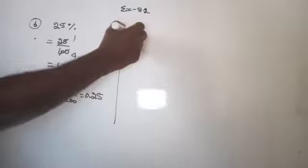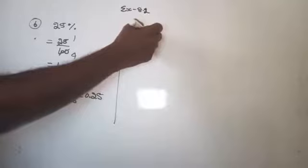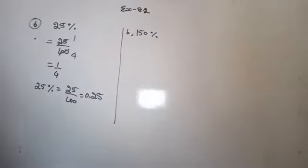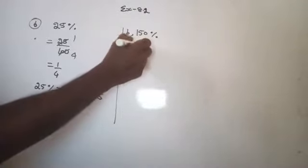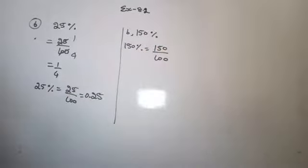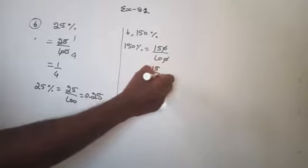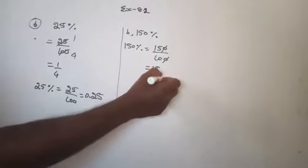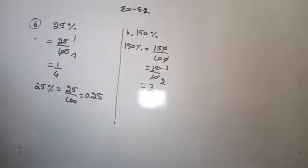The second part: 150% is given. First, convert the given percentage into fraction, then convert it into decimal. 1% means 1/100, so 150% can be written as 150/100. Reduce into the lowest form by striking out equal number of zeros: that gives 15/10. Then 5 goes into 15 three times, and 5 goes into 10 twice, which is equal to 3/2.